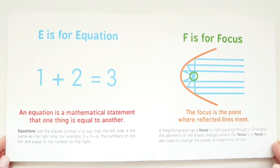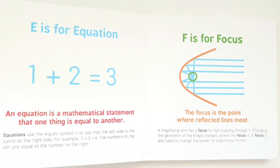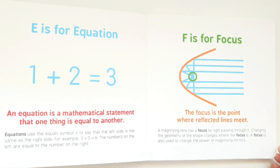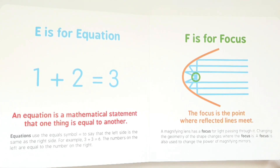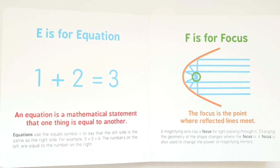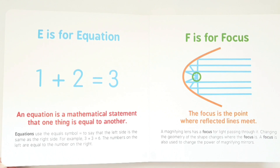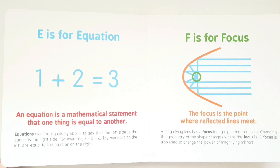E is for equation. An equation is a mathematical statement that one thing is equal to another. Equations use the equals symbol to say that the left side is the same as the right side. For example, 3 plus 3 equals 6. The numbers on the left are equal to the number on the right.